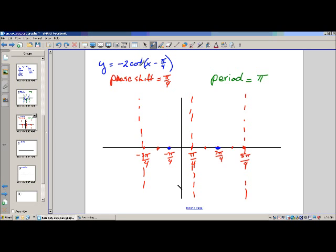Now, what does this negative 2 do? The negative is going to reflect it, and the 2 is going to stretch it. So, I'm going to go up 2 units, and I'm going to go down 2 units.